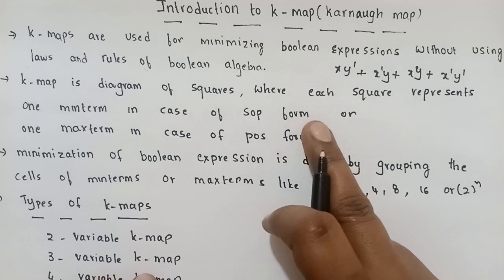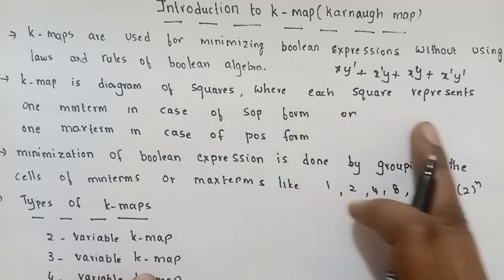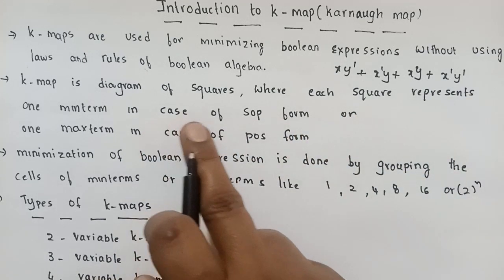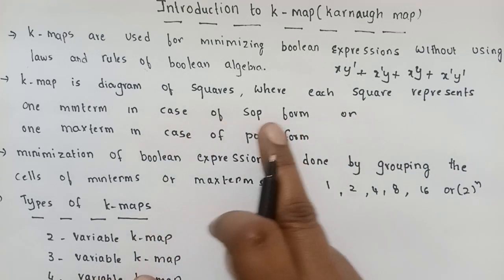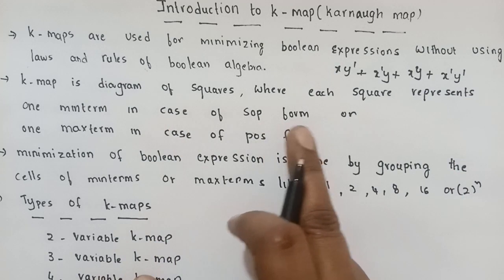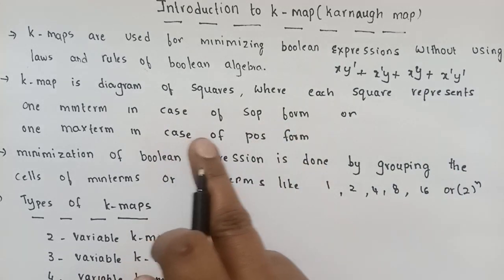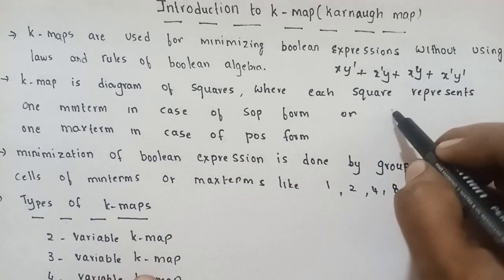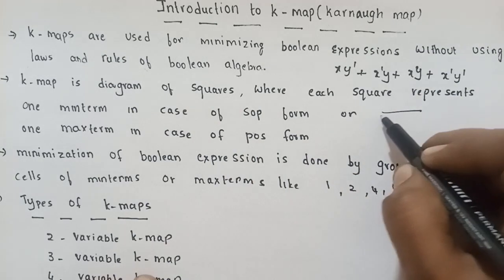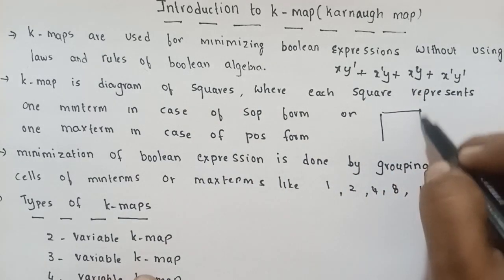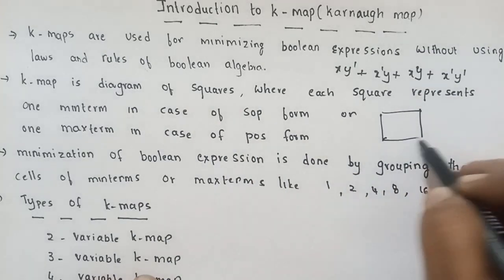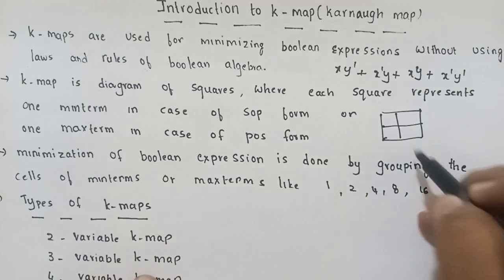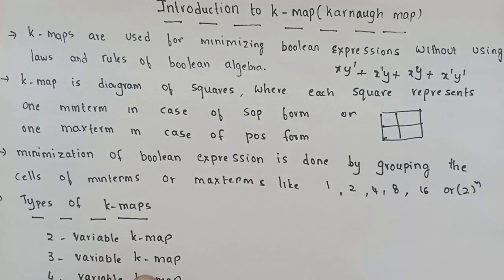K-map is a diagram of squares where each square represents one min term in case of SOP form and one max term in case of POS form. K-map is nothing but a diagram of squares.